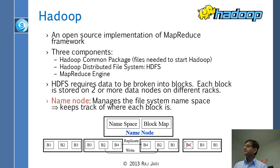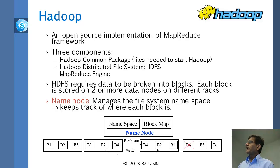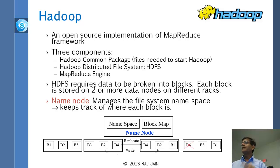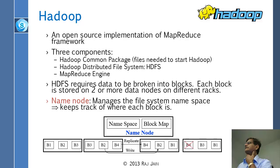HDFS — Hadoop Distributed File System — is very similar to Google File System. It requires data to be broken into blocks; each block is stored on two or more nodes on different machines. There is a central master server called the Name Node. The Name Node knows exactly where the blocks are — it translates file system names into block numbers and tracks which disk holds which block numbers, using both a block map and a name map. It does not store the data itself, only the map.